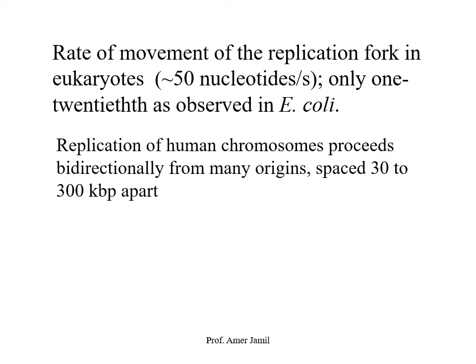The rate of replication in eukaryotes is also very low compared to prokaryotes — about 50 nucleotides per second, which is roughly 1/20th of the rate observed in E. coli. Although 50 nucleotides per second is still quite fast, it is much lower than the approximately 1000 nucleotides per second seen in prokaryotes. Replication of human chromosomes proceeds bidirectionally from many origins of replication, spaced at varying distances apart.